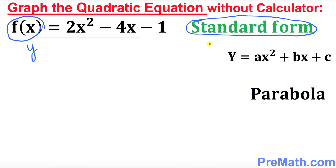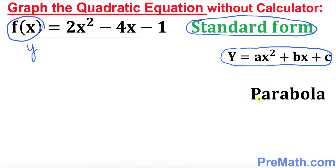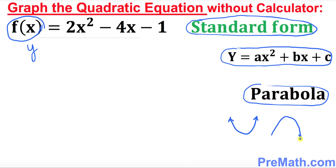Standard form is of the form y equals ax squared plus bx plus c — that form is called standard form. These kinds of quadratic equations are also called parabolas. A parabola looks like a U-shape: if it opens up it looks like this, and if it opens down it looks like this kind of graph.